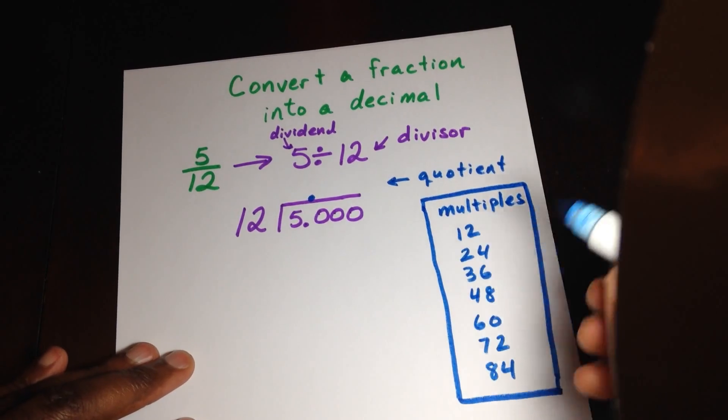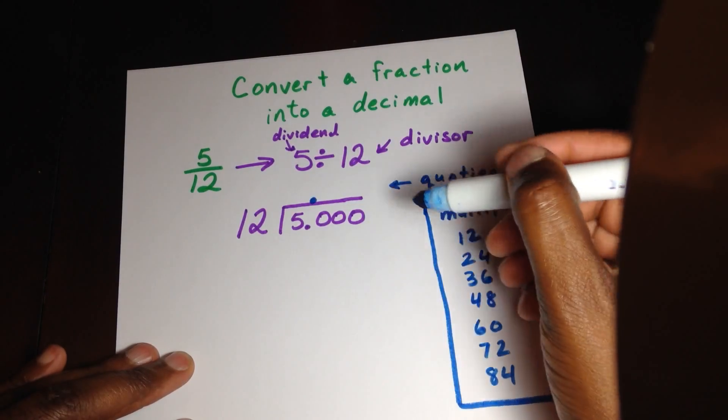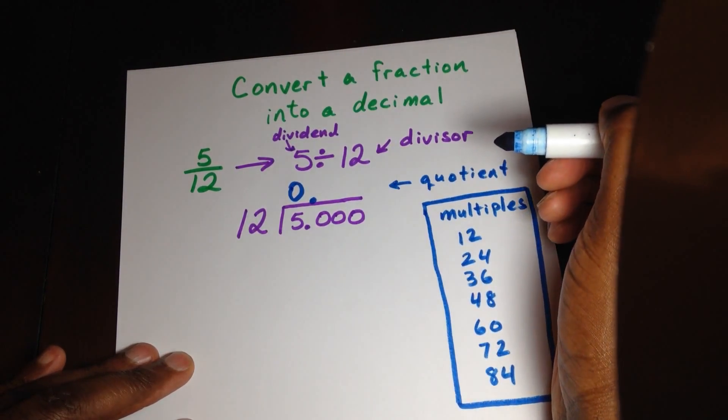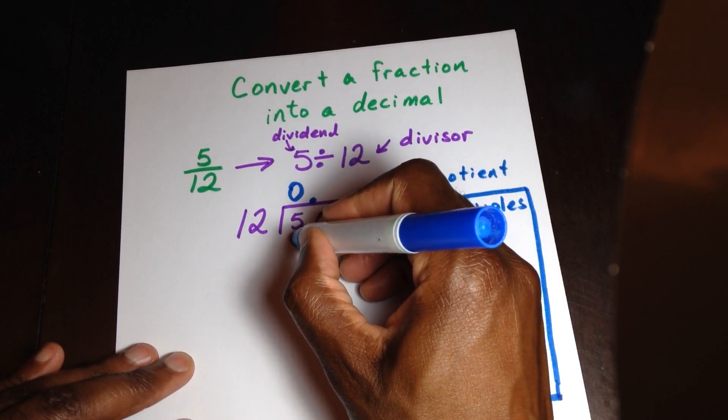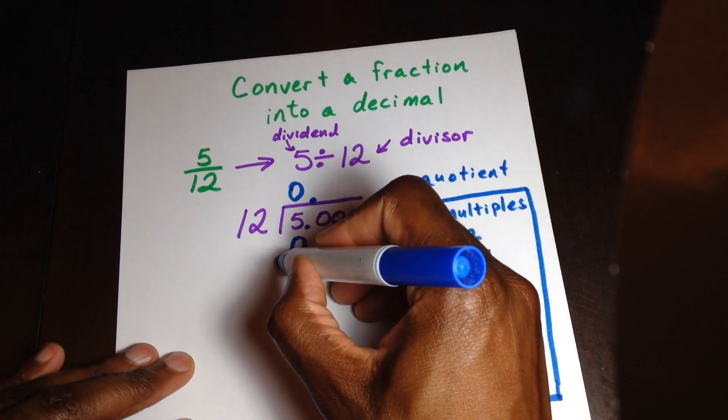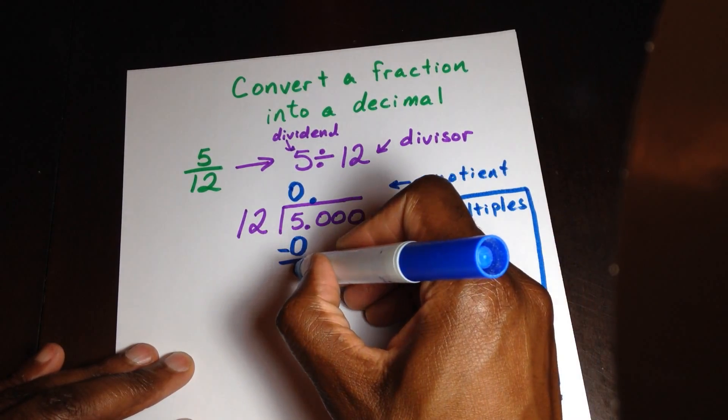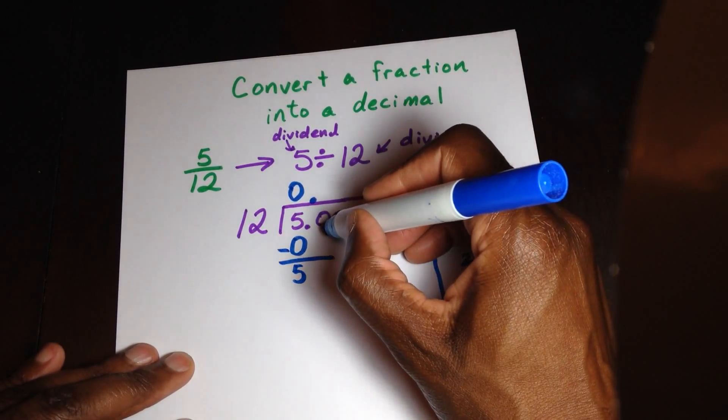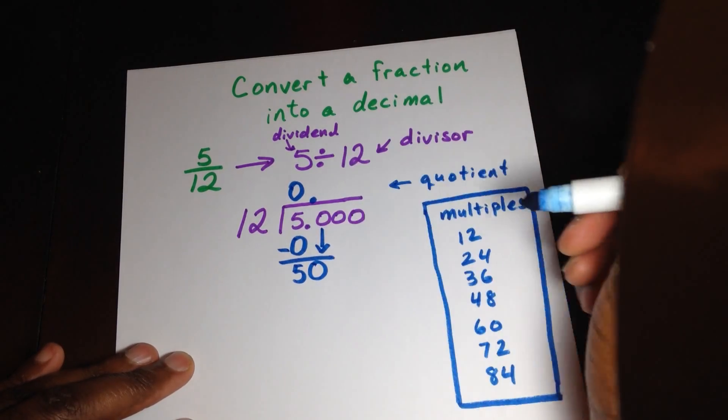Okay, so now we're seeing that 12 goes into 5. Well, 12 doesn't go into 5, so we put a 0 here. So what we're going to do now is we just do the subtraction. I'll put a 0 here because we're saying 0 times 12 is 0. So when you do the subtraction, you will have 5 take away 0, which is 5. Our next step is to bring down the 0. So we now have 50.